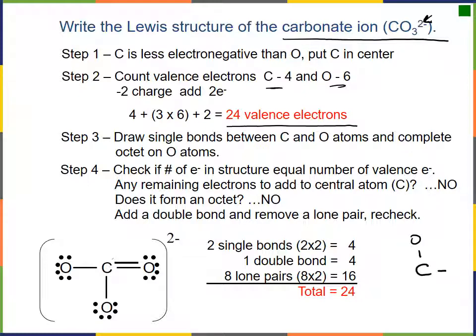We put carbon with single bonds to each oxygen, then place the remaining electrons on the outside atoms. When we've used up the 24 electrons, our urge is to put a couple more on carbon, but that would expand the octet. So we remove a lone pair from one oxygen and put in a double bond, giving us a complete Lewis structure for the carbonate ion.